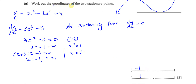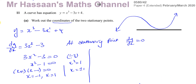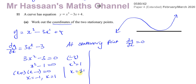They are asking us for the coordinates, so we also need the y-coordinates. A common mistake is to substitute these values into the gradient function — but that will just give zero, because we already worked out that dy/dx equals zero when x equals minus 1 and 1. The gradient function dy/dx does not tell us the y-coordinate; it tells us the gradient at that x value.